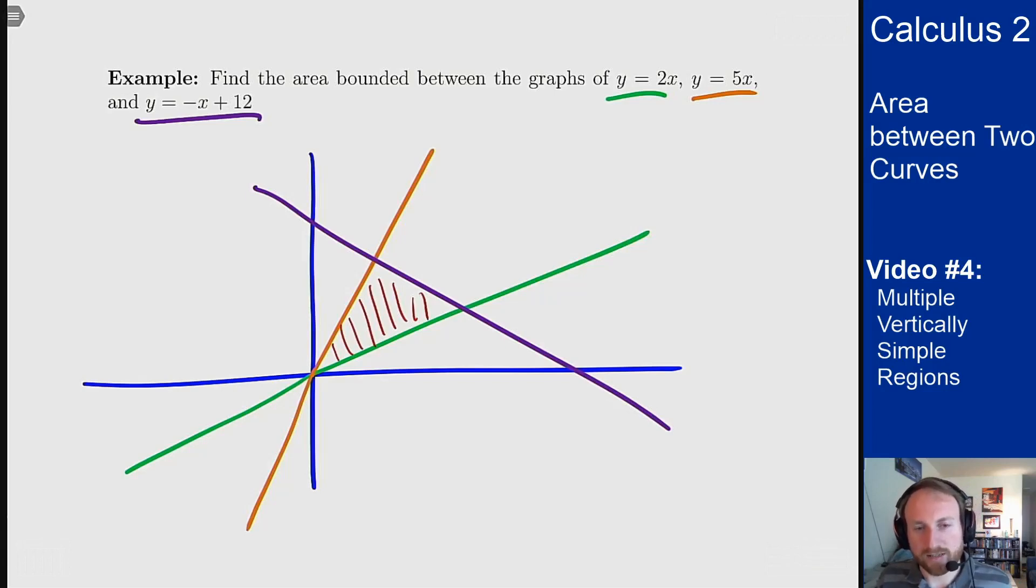There's no one function on top the entire way. The green line is always on the bottom, but the top line switches from orange to purple halfway through. So to build this up, we need to find all these intersection points. Well, this one here I know is the origin. Let's find the other two.